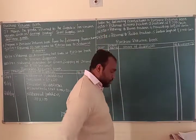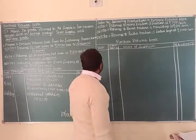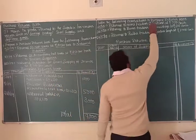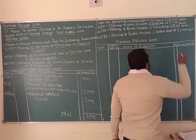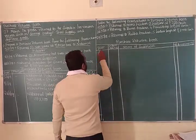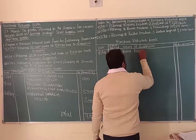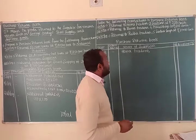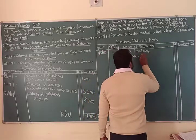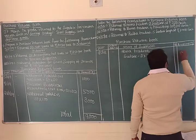Enter the following transactions in the Purchase Returns Book. On 1st May 2018, we returned goods to AMR Traders — 2 suitcases at Rs. 500 each. So 2 suitcases into Rs. 500 — we get Rs. 1,000.